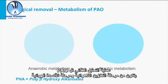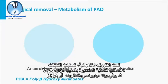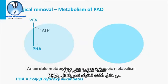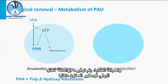The PAO have the ability to accumulate phosphorus to approximately 10 to 15 percent of their cell dry mass. The metabolism of the PAO consists of an anaerobic storage stage and an aerobic oxidation stage. Under anaerobic conditions, the organisms can consume influent volatile fatty acids as poly-beta-hydroxyalkanoate, or PHA. Energy required for the transport of VFA through the cell membrane, for conversion into PHA, and for cell maintenance, is provided by the hydrolysis of the internally stored polyP.